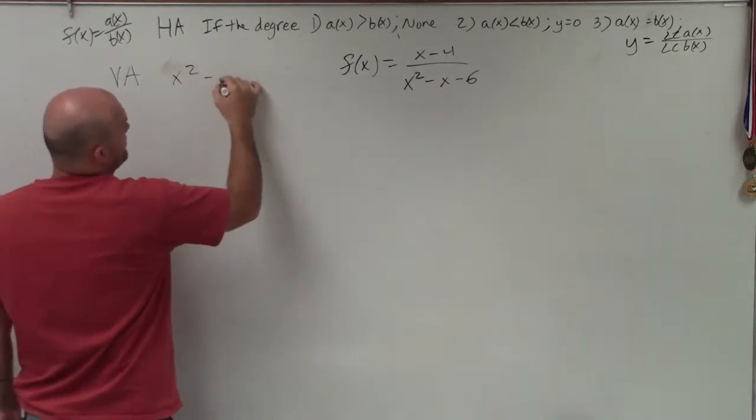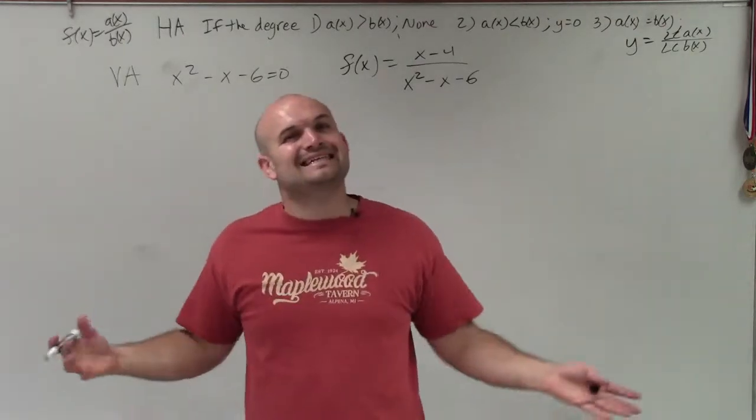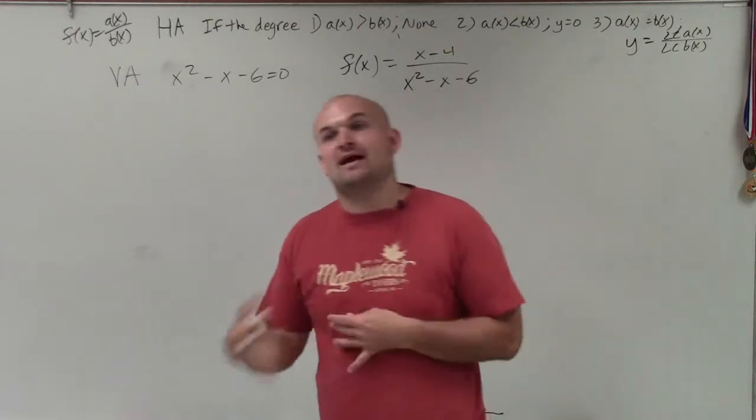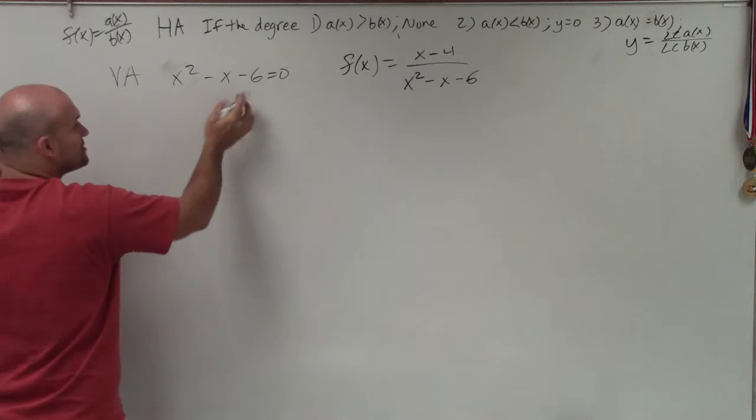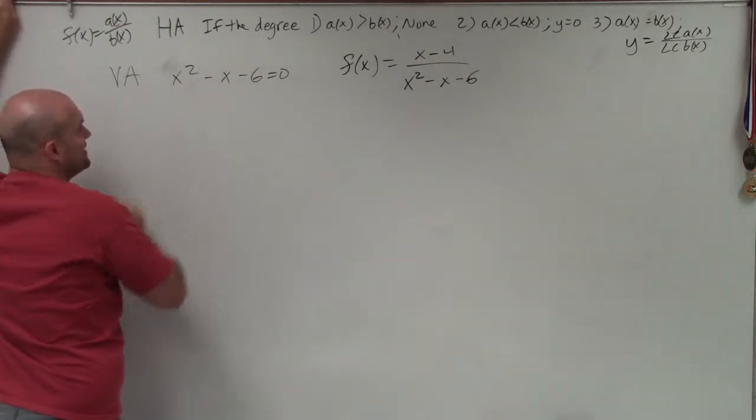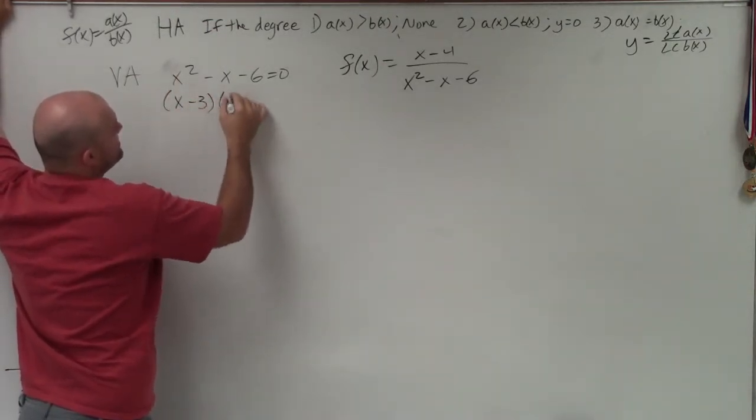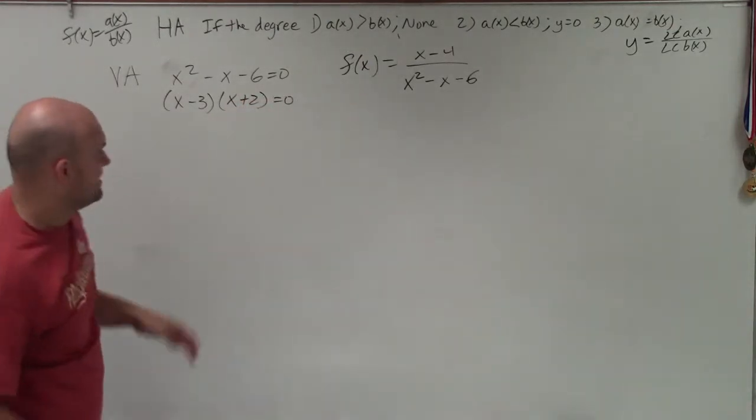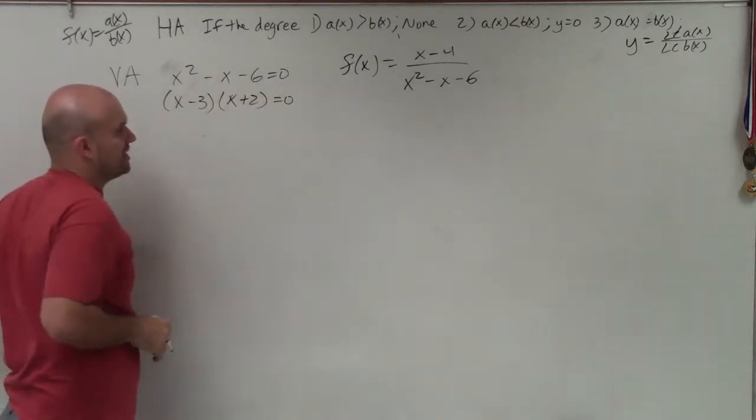So I take x squared minus x minus 6 equals 0. When I go to solve, I look at this and say I can't solve using inverse operations. I have to apply factoring and then use the zero product property. So I look into factoring this. Since I have just an x squared, I can look at this and say, what two numbers multiply to give me negative 6 and add to give me negative 1? And I can factor that to x minus 3 times x plus 2. If you don't believe me or you don't know how I got that, obviously I have factoring videos, but you can also just apply FOIL to double check your work.